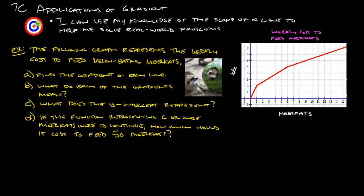Okay, so what we're going to do here is we're going to find the gradient of each one of these lines here. We're going to figure out what each of the gradients mean, and then we're going to figure out what does the y-intercept represent, and then if the function representing six or more meerkats were to continue, how much would it cost to feed 50 meerkats? And that's this line here, the six or more, so we're talking about this line here.